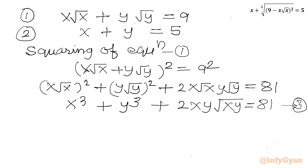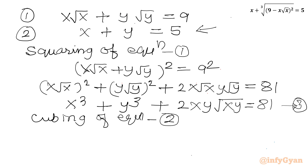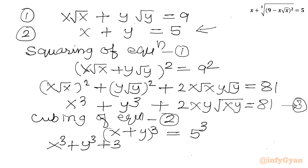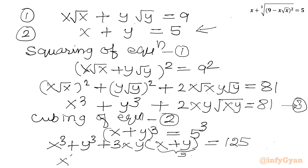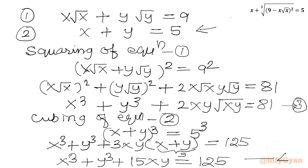Now I will take cubing of equation 2. So x plus y whole cube equals 5 whole cube, which is 125. Applying the identity: x cubed plus y cubed plus 3xy times (x plus y) equals 125. Since x plus y is 5, this becomes x cubed plus y cubed plus 15xy equals 125. Let us call this equation 4.